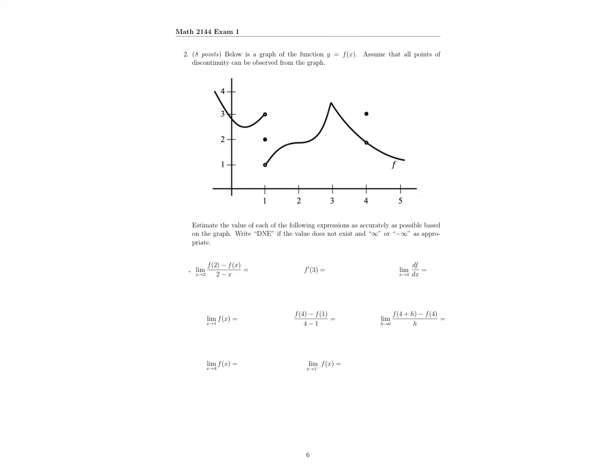This notation is the limit definition of the derivative. So at x equals 2, we want to say, what's the value of the derivative or the slope of the tangent line? And as you can see, we have this almost point of inflection where the tangent line is horizontal. The slope of a horizontal line is equal to 0, so this is just the derivative at x equals 2, which equals 0.